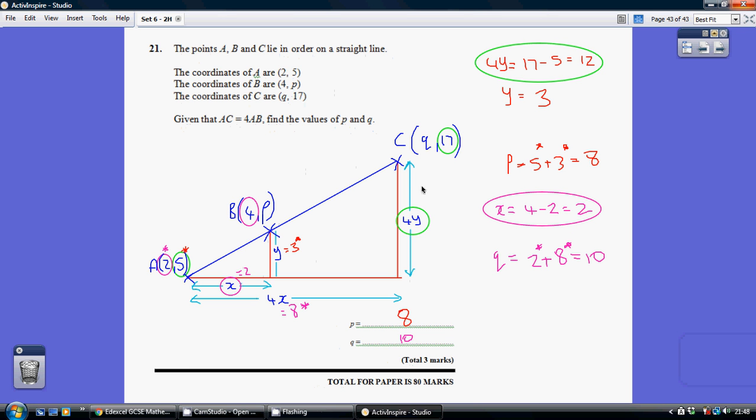4Y equals 12. So Y equals 3. This height here is 3. So P is 3 further up than 5. 5 add 3 equals 8. So the coordinates of B are 4, 8. P equals 8.